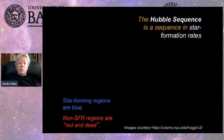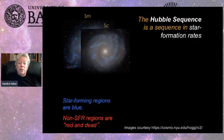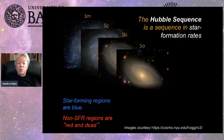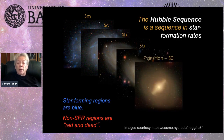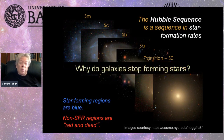Let me first remind you of something very basic. The Hubble sequence is a sequence in star formation, very visible in these beautiful Sloan pictures. We're going from galaxies with blue stars to ellipticals with no blue stars. Star-forming regions are blue; non-star-forming regions are red and dead. The question we want to understand is: why do galaxies stop forming stars?